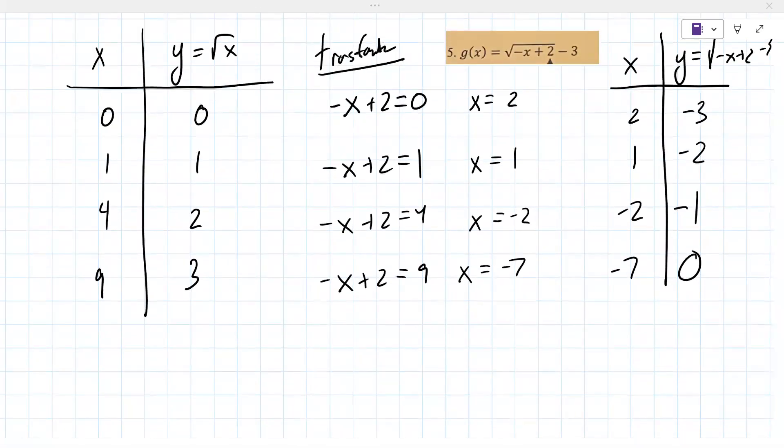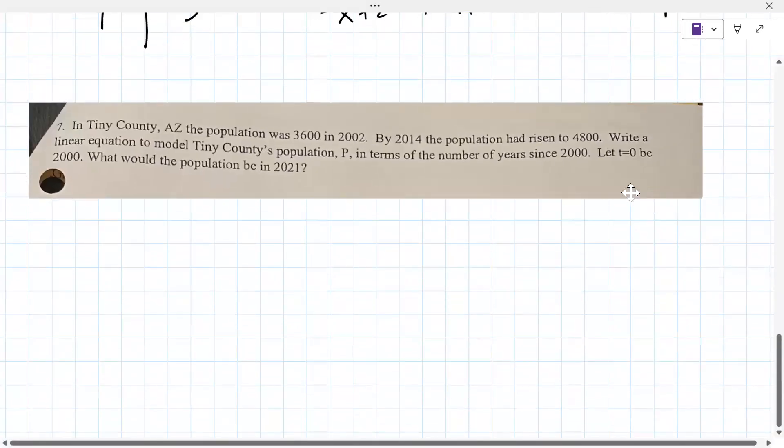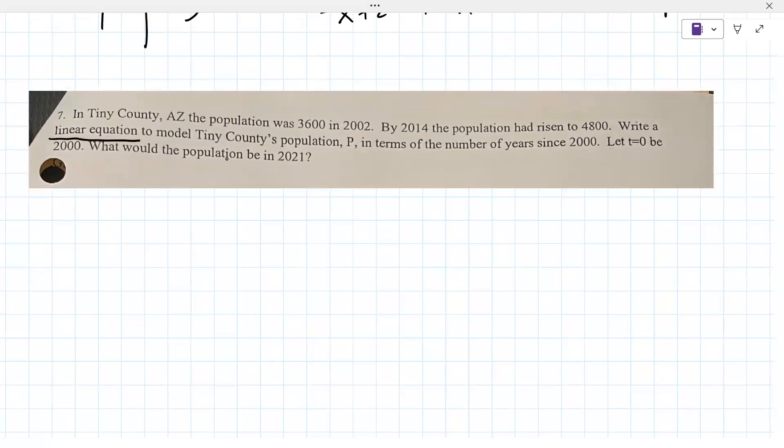We had about five, we've got five more minutes here. Where would you like to go next? On the same paper that she sent you, number seven when that's like a word problem, I just don't know the equation to that. Sometimes it looks more difficult than it actually is. It says in Tiny County, Arizona, the population was this and this year by 2014, the population had risen to 4,800, write a linear equation.